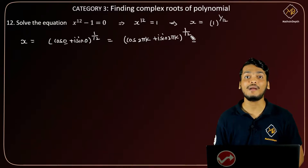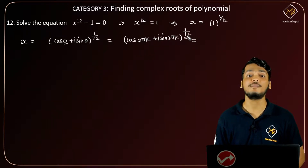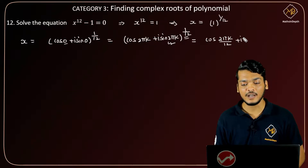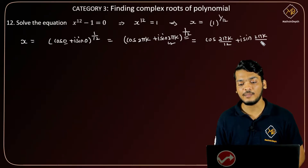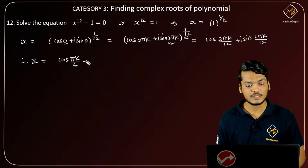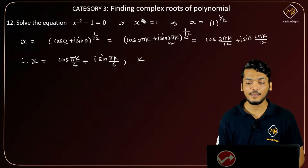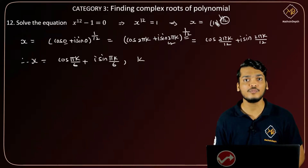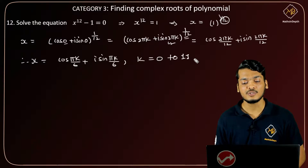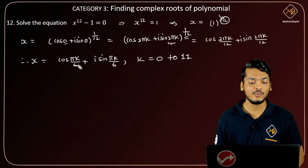By De Moivre's theorem, I can multiply 1/12 with the angle 2πk. So this equals cos(2πk/12) + i·sin(2πk/12). Therefore x = cos(πk/6) + i·sin(πk/6). Now I will put 12 values of k (k = 0 to 11) and get 12 different roots.